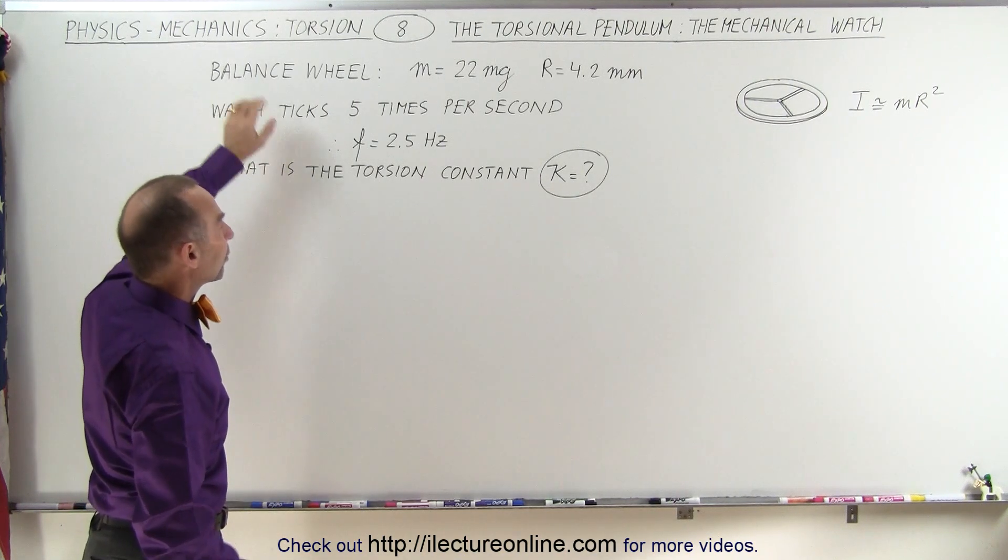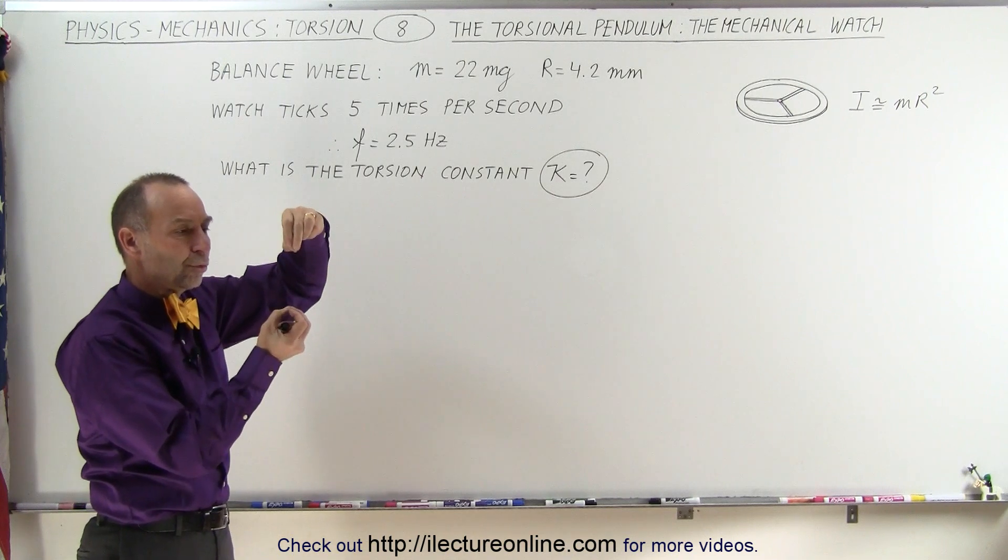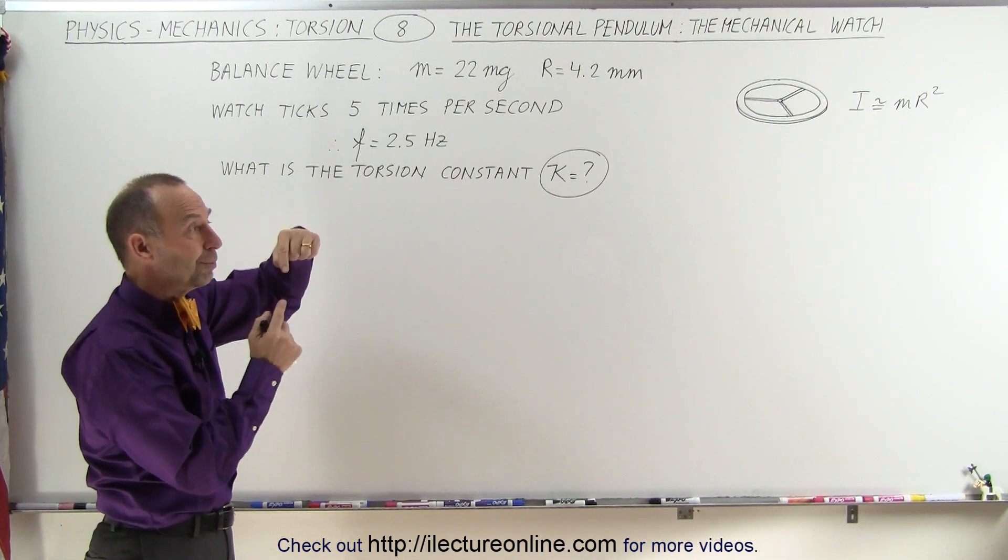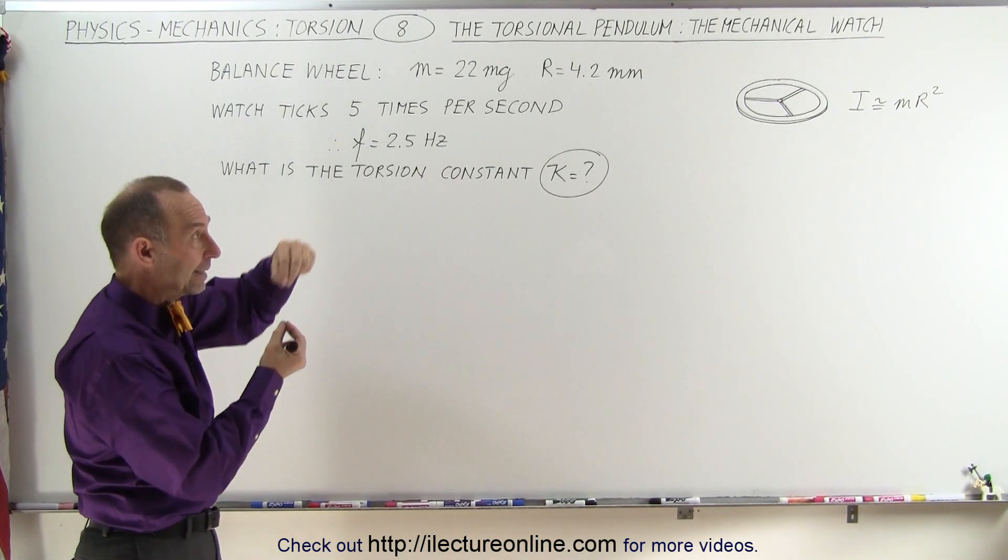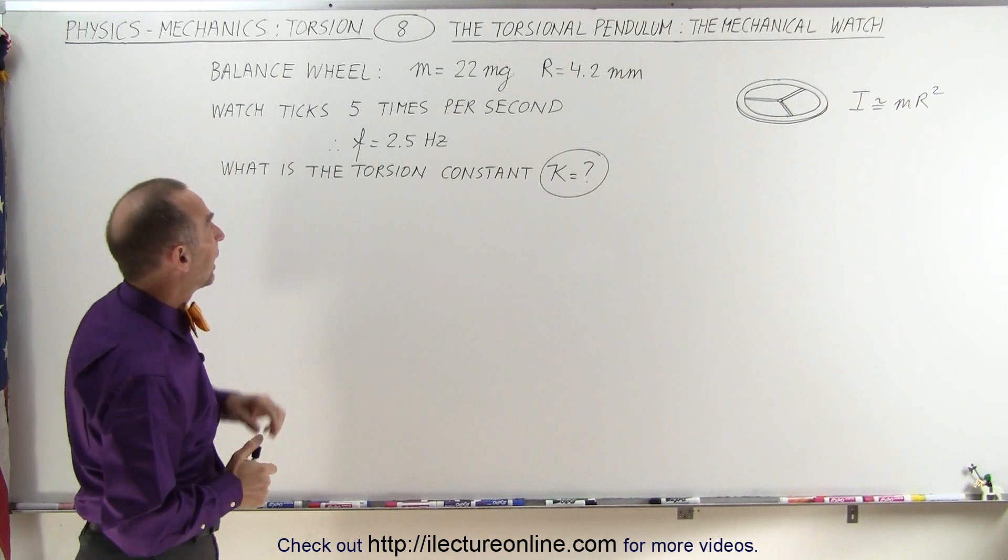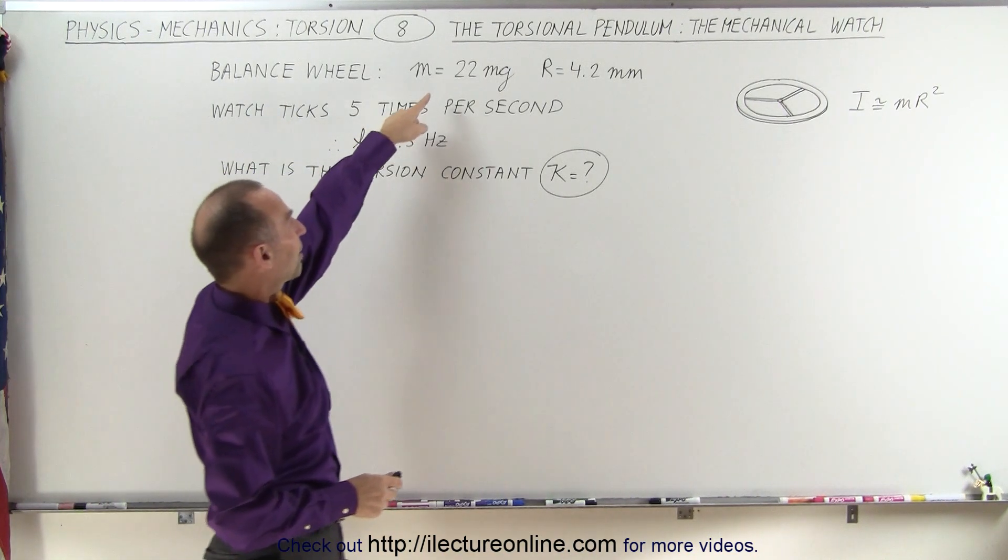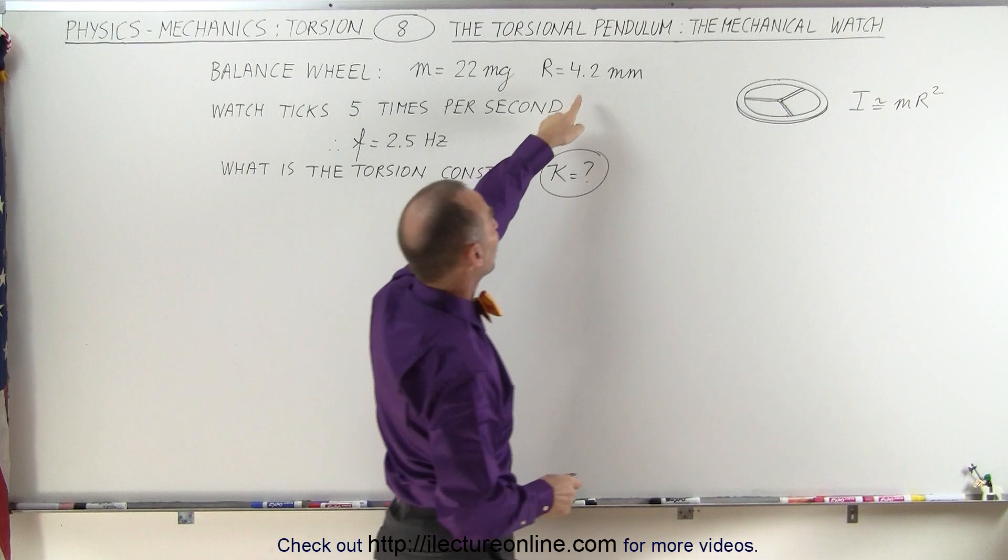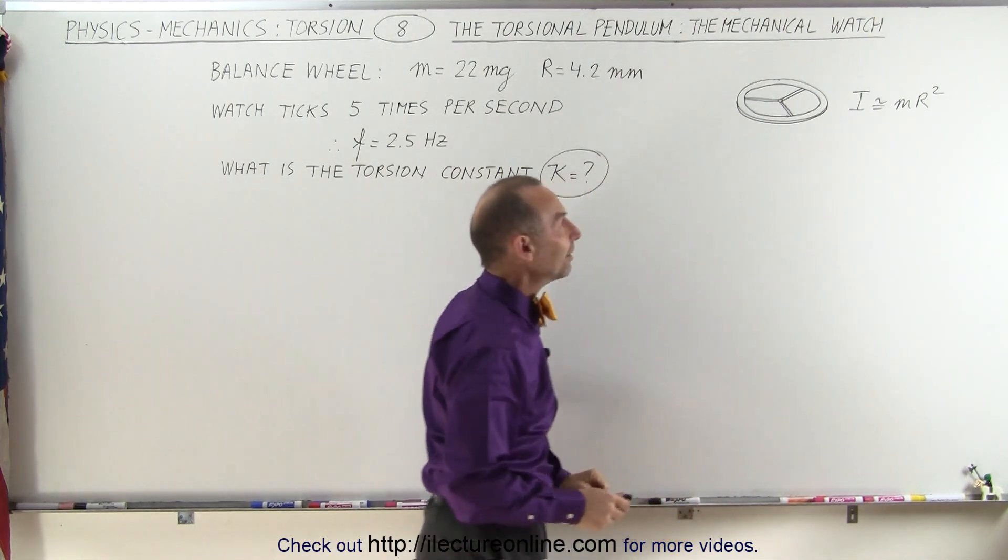Let's say we have one of those balance wheels which of course is set up between two very small crystals to minimize the friction at the axis of rotation. Let's say that balance wheel has a mass of 22 milligrams and a radius of 4.2 millimeters, and here's a drawing of that.